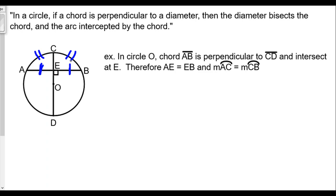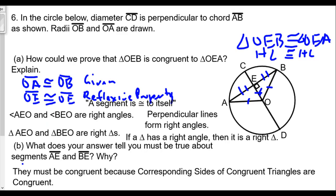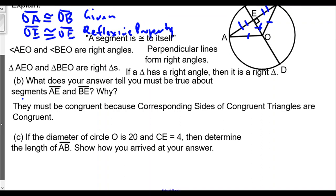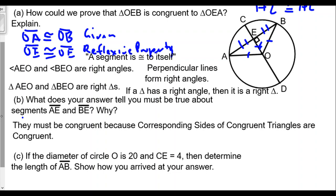Now for part C: the diameter of circle O is 20 and CE is 4. If the diameter is 20 and CE is 4, that would mean ED is going to be 16, because 16 plus 4 equals 20.